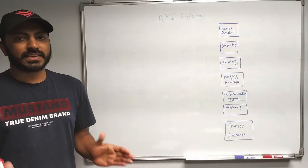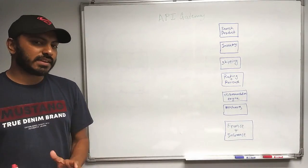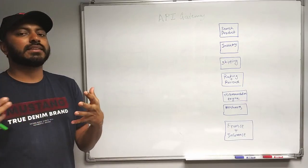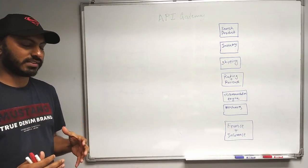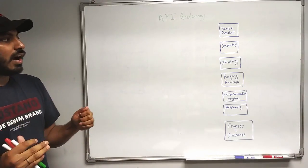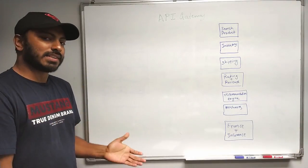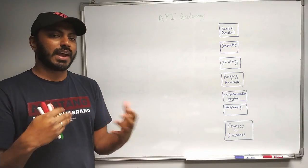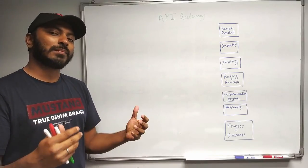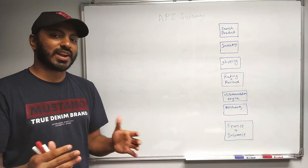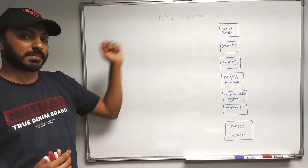So far we learned all the basic things about microservices and it's time to go in-depth and understand some of the other components which are used along with the microservices. Let's take the same example of an e-commerce application, take one complex page, and understand why we need API gateway specifically.